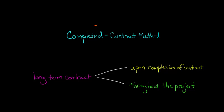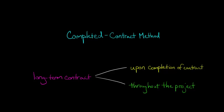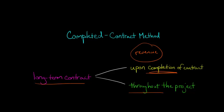In this video, we're going to talk about the completed contract method in accounting. In our last video, we talked about how when you have a long-term contract, there are a couple different ways you can go about accounting for the revenue you recognize. One way is to wait until the contract has been completed — upon completion of, say, a five-year contract, you recognize the revenue at the end of year five. The other way is to recognize revenue throughout the project with the percentage of completion method. In this video, I want to talk about this first method: waiting until the end of the contract to actually book any of the revenue.